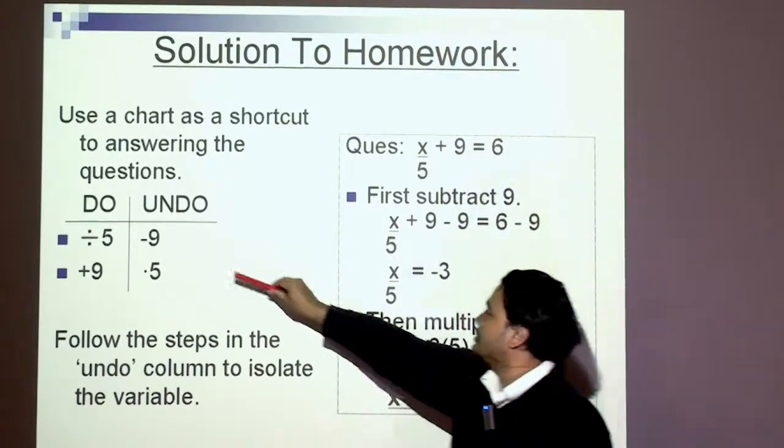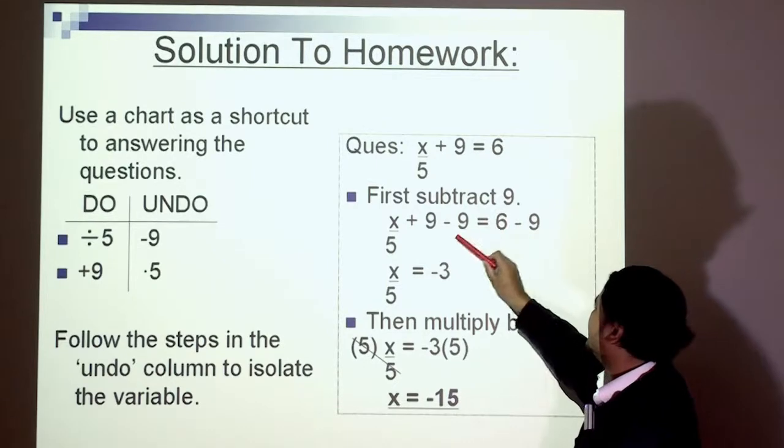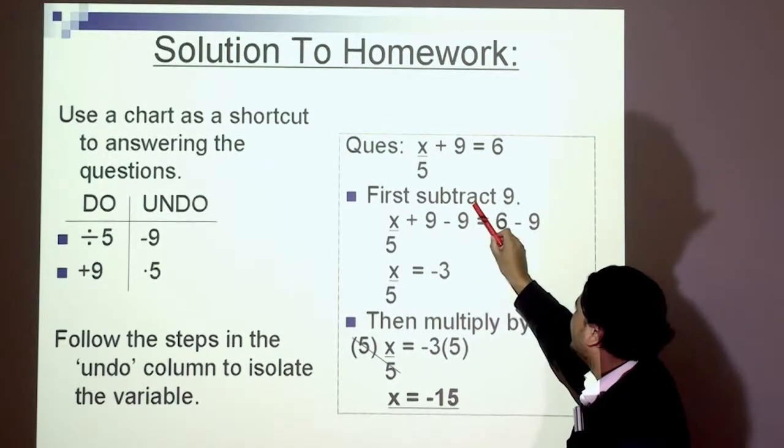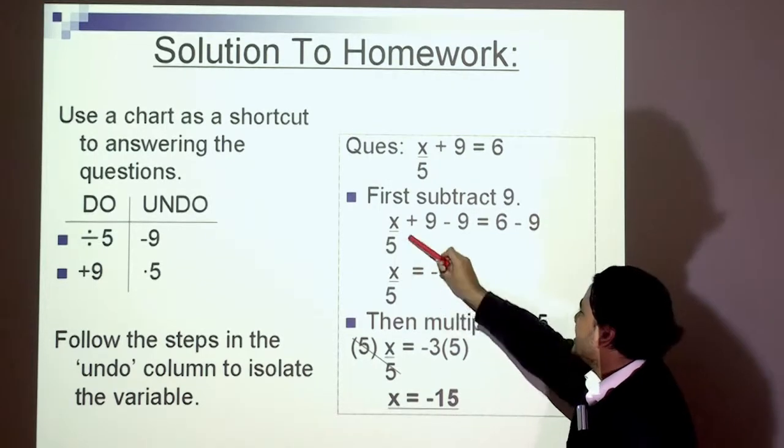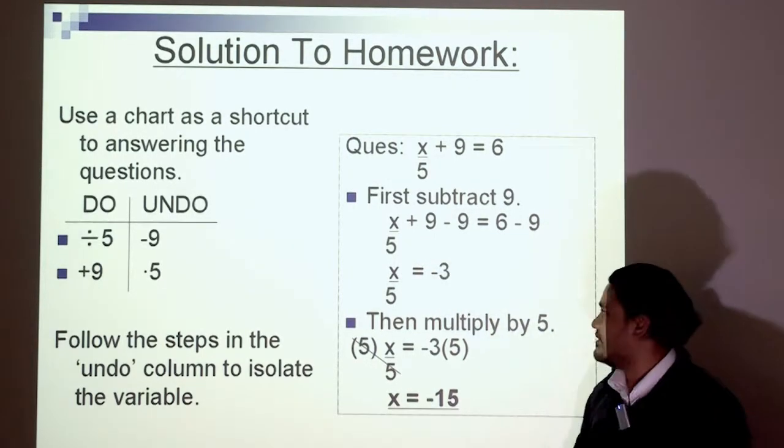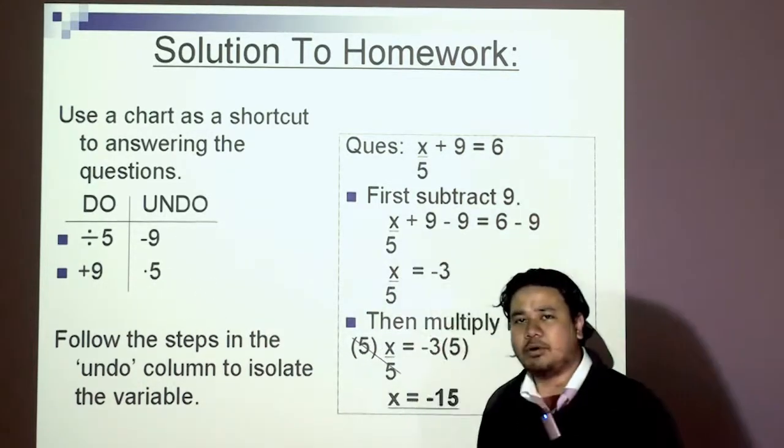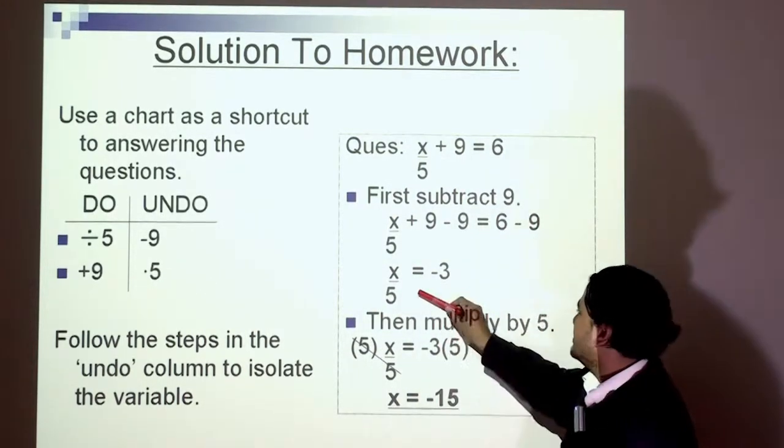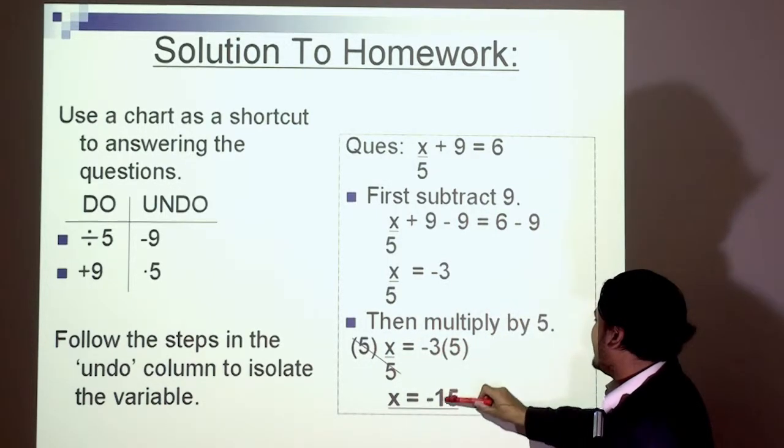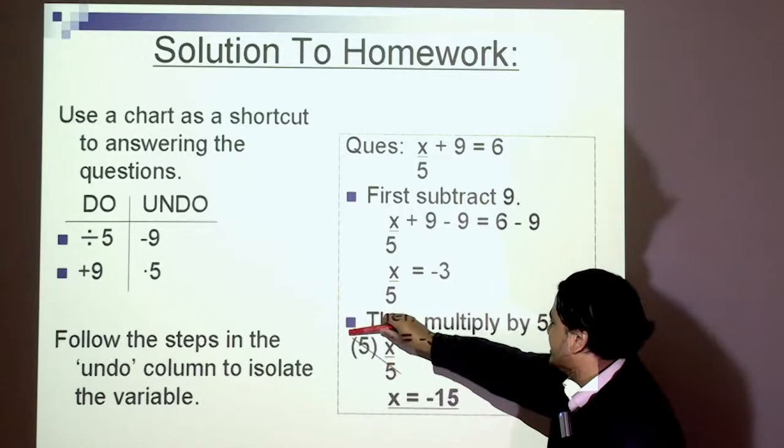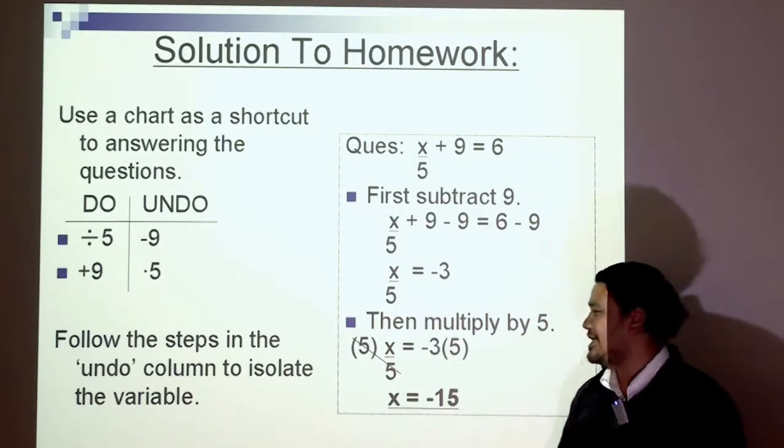Therefore the first thing we're going to do to solve for x is take away 9 from both sides. That'll cancel out the 9 here. 6 take away 9 equals negative 3, so x over 5 equals negative 3. The next thing we're going to do is multiply both sides by 5. Therefore negative 3 times 5 is negative 15. That 5 will cancel out, so x equals negative 15.